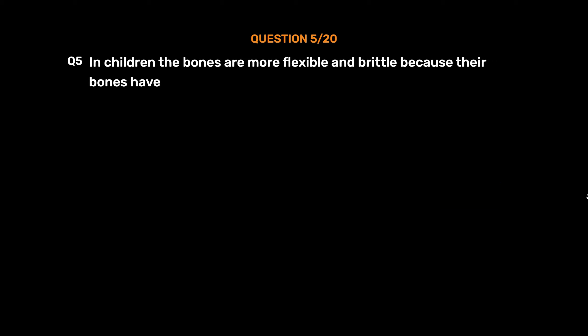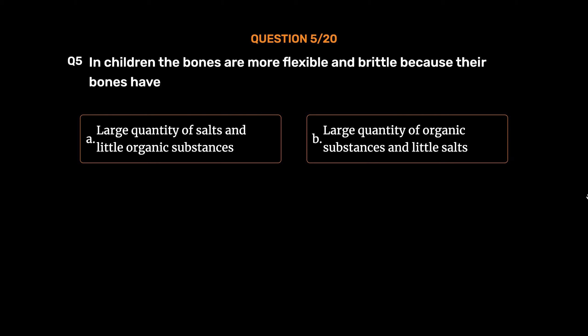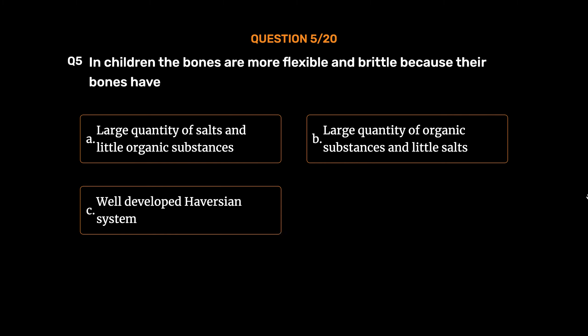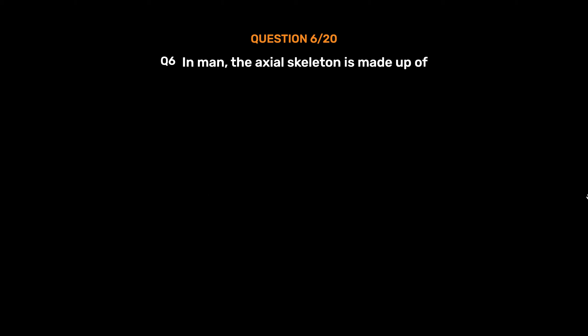Question No. 5. In children, the bones are more flexible and brittle because their bones have: Option A. Large quantity of salts and little organic substances, Option B. Large quantity of organic substances and little salts, Option C. Well developed Haversian system, Option D. Large number of osteoblasts. The correct answer is Option B, large quantity of organic substances and little salts.